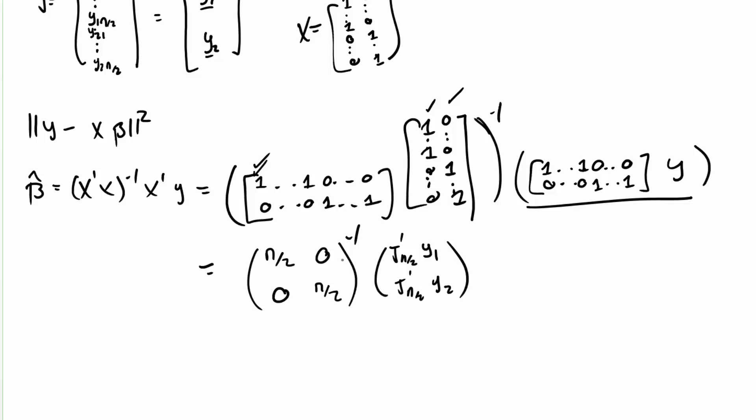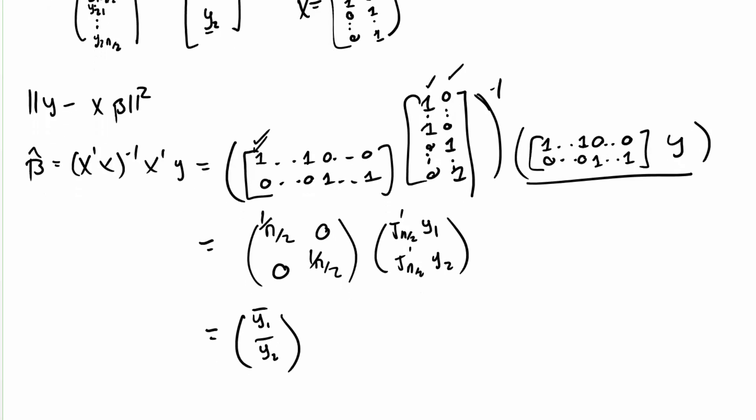And the inverse is pretty easy because it's a diagonal matrix, so it's just one over both of those. And then, so what we get is that y1 bar and y2 bar are the slope estimates for beta, which is what we would imagine should happen.